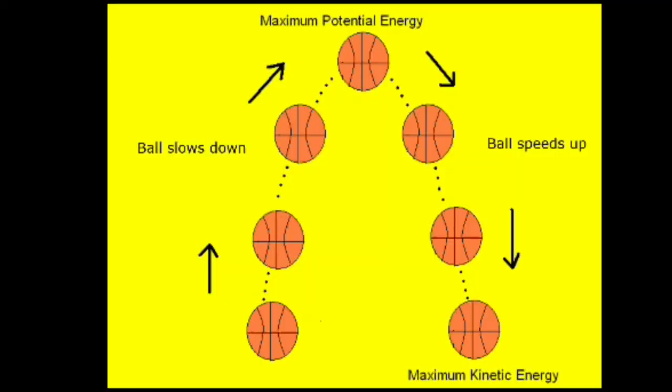When the ball is going up, it is slowing down. At the topmost level, maximum potential energy is there. When the ball is coming downwards, the ball speeds up. At the last stage, maximum kinetic energy is there.